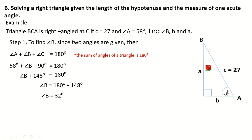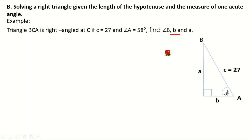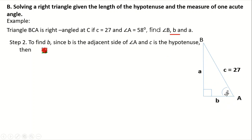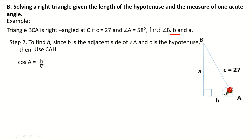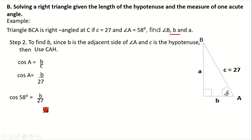Now let's find the two legs. Going to side B — it is adjacent to angle A. To find it, since B is adjacent to angle A and we have the hypotenuse, we can use cosine again. Cosine equals adjacent over hypotenuse, so cos A equals B over C. Angle A is 58 degrees, B is what we're looking for, and C (the hypotenuse) is 27. Cross-multiplying: B equals 27 times cosine of 58 degrees, which gives us approximately 14.31.